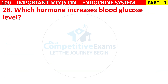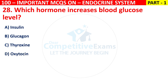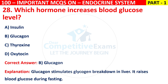Q28. Which hormone increases blood glucose level? Options are insulin, glucagon, thyroxin, or oxytocin. The right answer is B, that is glucagon. Glucagon stimulates glycogen breakdown in the liver. It raises blood glucose during fasting.